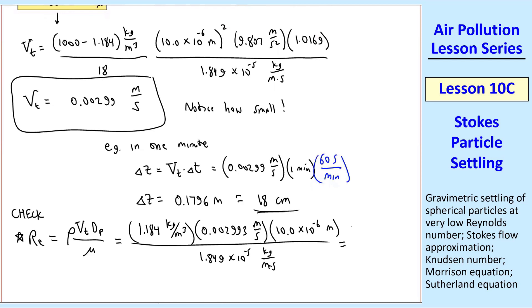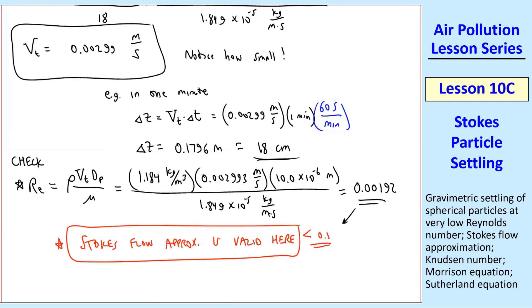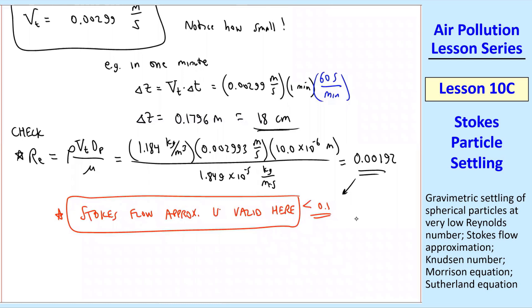Plug in your calculator. I get a Reynolds number of 0.00192, which is much less than 0.1. So we conclude that Stokes flow approximation is valid here. So I can be confident with that value of VT that I calculated.